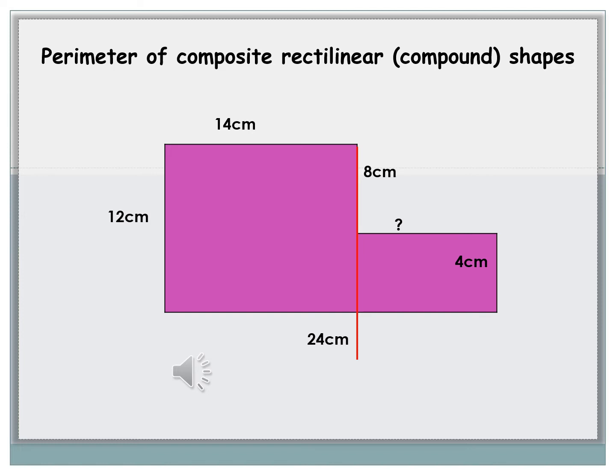We've got a question mark, so for that you need to use the information that you've got. We can see that the whole length of that bottom is 24 centimeters. At the top you have got 14 centimeters, and you're missing the last value. So you can do a simple subtraction of 24 take away 14, and you will be able to work out that that question mark is 10.